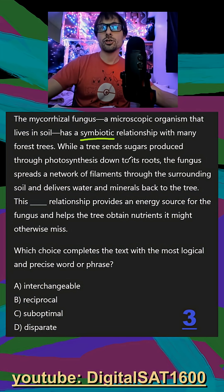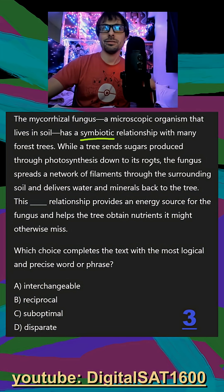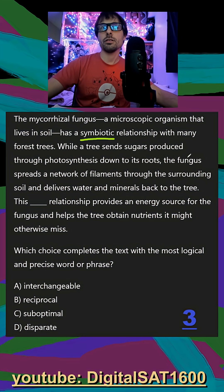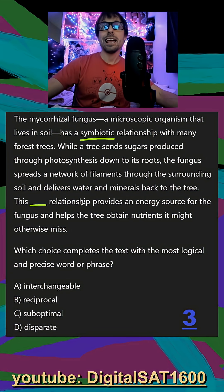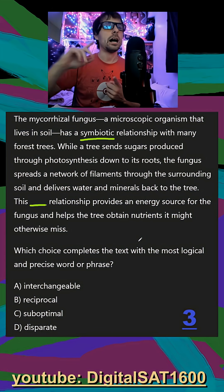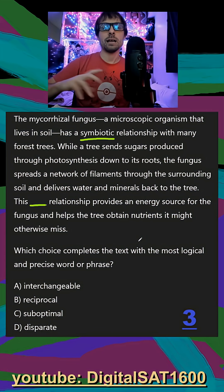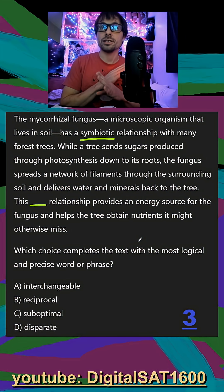While a tree sends sugars produced through photosynthesis down to its roots — which the fungus gets — the fungus spreads filaments through the soil and delivers water and minerals back to the tree. This beneficial relationship provides an energy source for the fungus and helps the tree obtain nutrients it might otherwise miss. So we're looking for a positive word that describes the beneficial relationship between these two things.